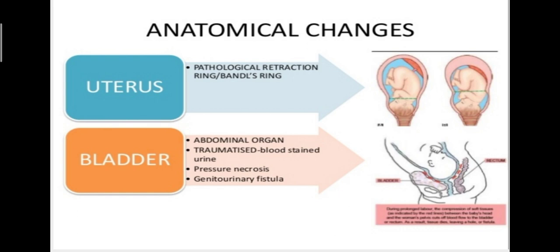During obstruction, there will be anatomical changes in the uterus and bladder. In the uterus, there is formation of Bandl's ring, also called the pathological retraction ring. During obstructed labour, there is a gradual increase in intensity, duration, and frequency of uterine contraction. The relaxation phase becomes less and less. Ultimately, a state of tonic contraction develops. A circular groove encircling the uterus is formed between the active upper segment and the distended lower segment, called the pathological retraction ring.